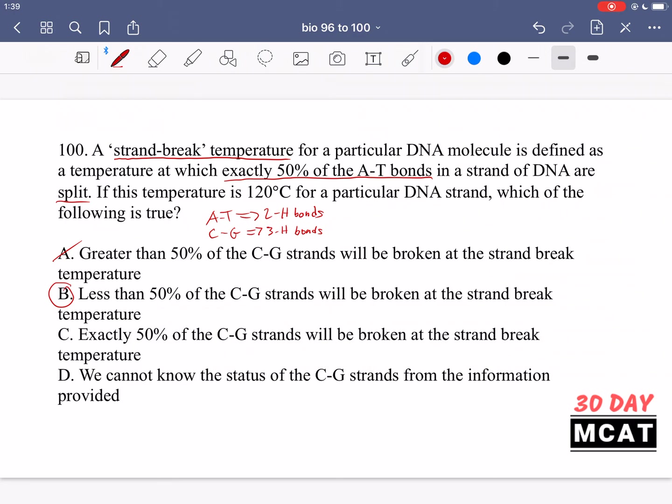And C is saying exactly the same number will be broken. No, that's incorrect. D is also incorrect. You should know just a very important thing and very common in terms of MCAT questions that you see on practice and it can likely show up on your actual MCAT is that between AT bonds and CG bonds there is a difference in the number of hydrogen bonds that hold them together and CG bonds are stronger.